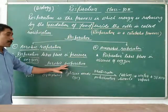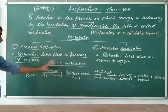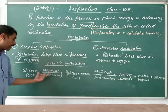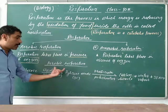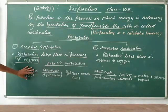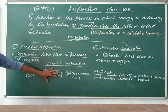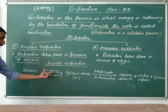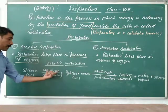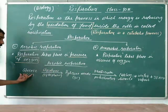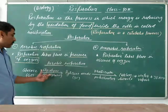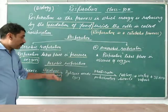In aerobic respiration, glucose enters into the cytoplasm, where the glucose molecules are broken into 3-carbon molecules such as pyruvic acid. This first step is called glycolysis. Glyco means glucose — it is the breaking down of glucose into 2 molecules of 3-carbon compounds in the cytoplasm. This is known as the glycolysis process.